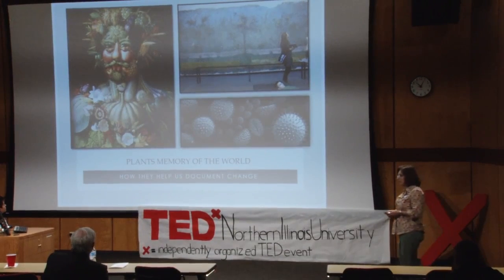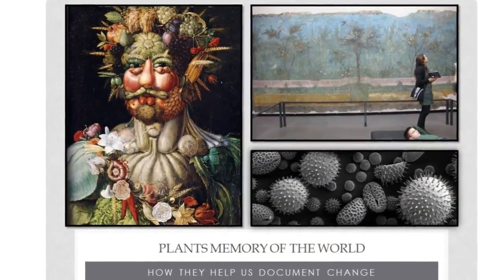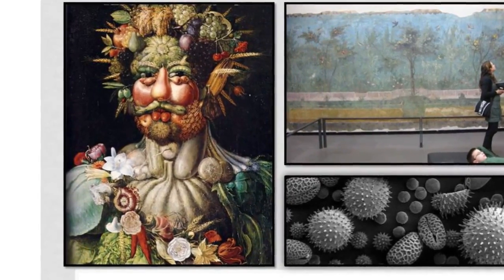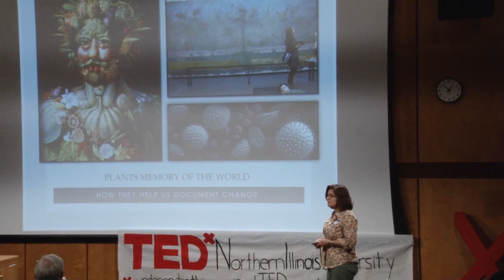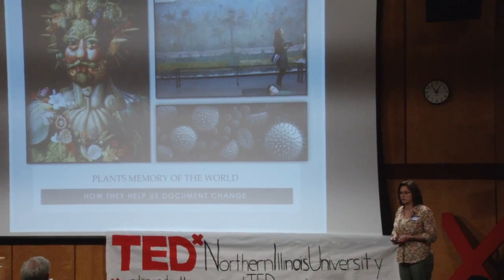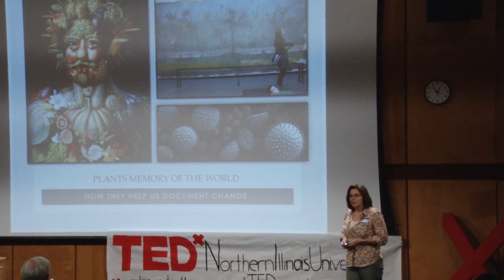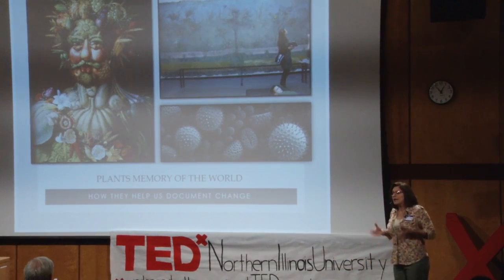Plants document their own lives, but we also document plants' lives. The picture on the left is a painting by the Italian artist Arcimboldo, painted in the 1500s — it's a mythical god of the harvest. If you look at that painting and think about Milan in the 1500s, it gives us a really good picture of what plants would be growing there. But there's something missing. If we think about Italian food today — pasta, pizza — the key ingredient would be a tomato. There are no tomatoes in this picture because tomatoes were introduced to Europe around that time from the Andes in South America.